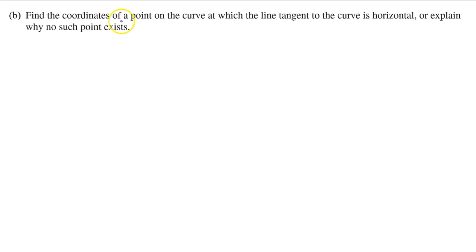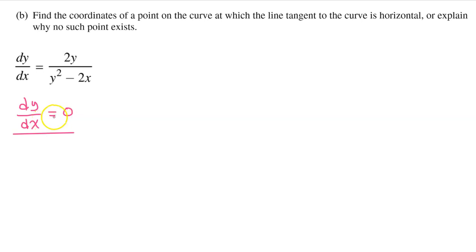Part B: Find the coordinates of a point on the curve at which the line tangent to the curve is horizontal, or explain why no such point exists. A horizontal tangent line can only occur when the first derivative is equal to 0, so let's start by setting dy/dx equal to 0. A fraction can only equal 0 if the numerator is equal to 0, so that means that 2y would equal 0, which would make y equal 0.